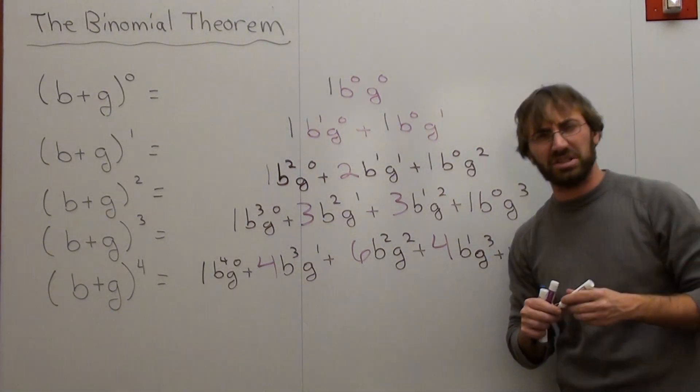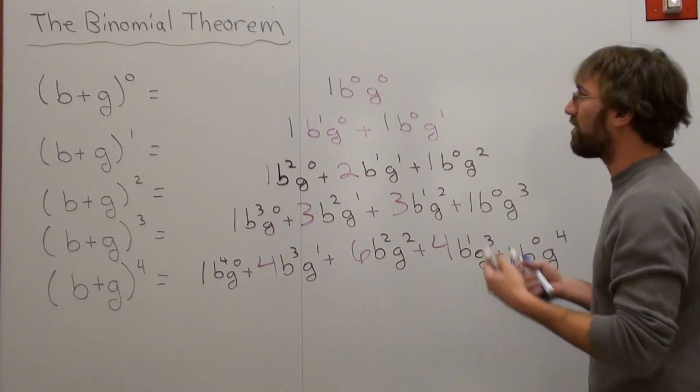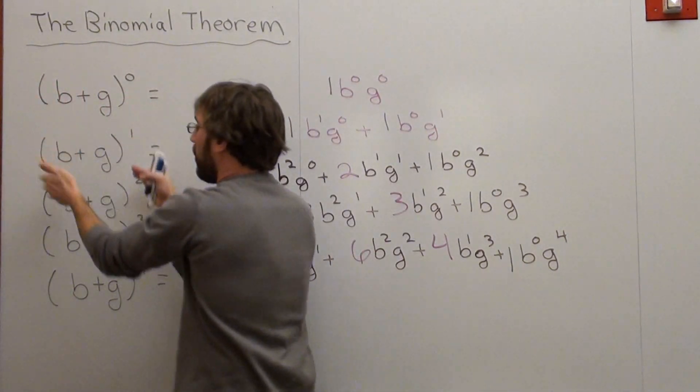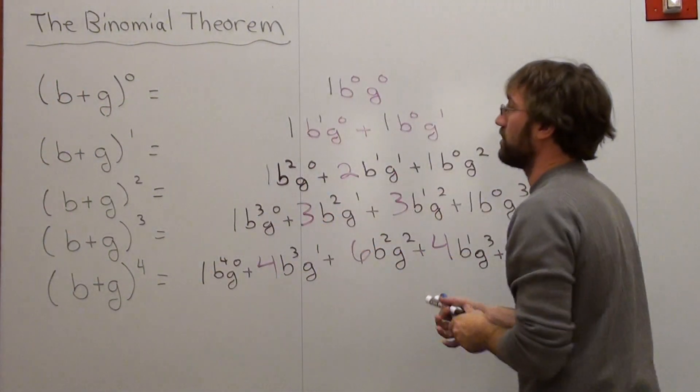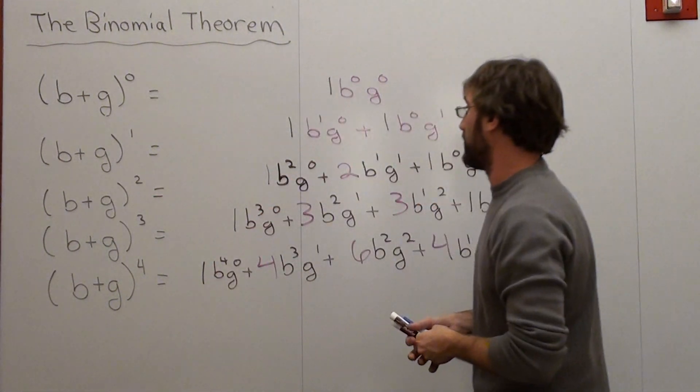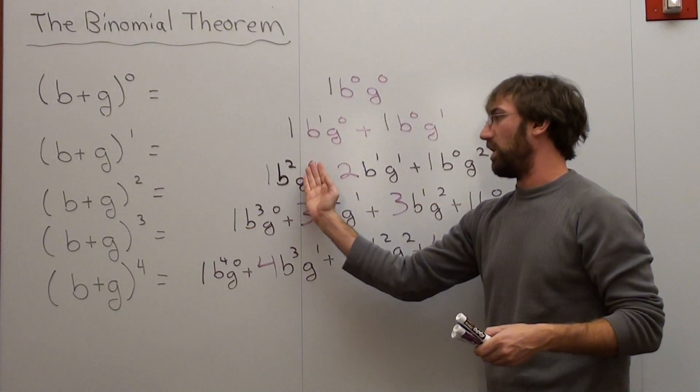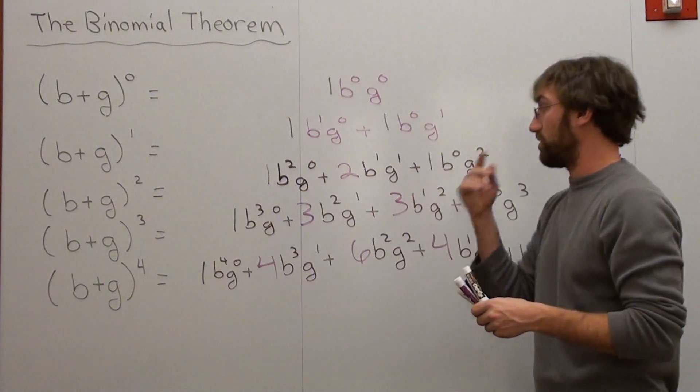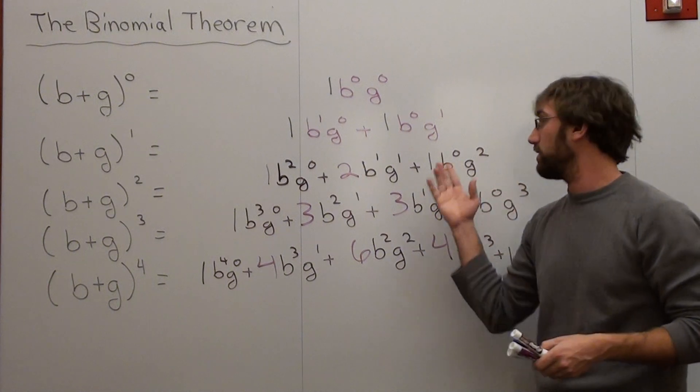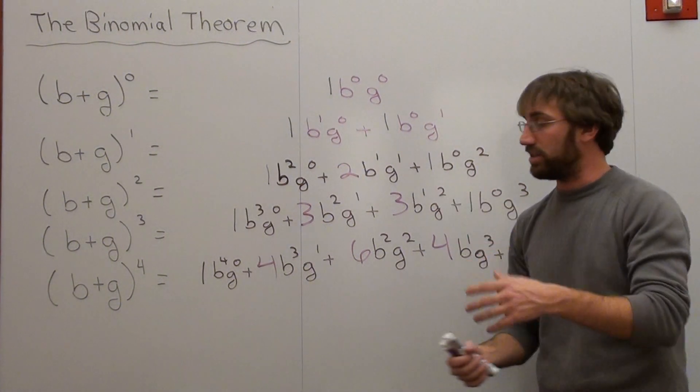And then I ask students, does this make sense? And they say, not really. And I say, okay. Well, what basically happens is when I take all of these, this is my resulting answer. b plus g quantity squared factors out to 1b squared, and then g to the 0 is just 1. Anything to the 0 power is just 1, so it's arbitrary. Plus 2bg plus 1g squared. You can ignore everything with a b to a 0.